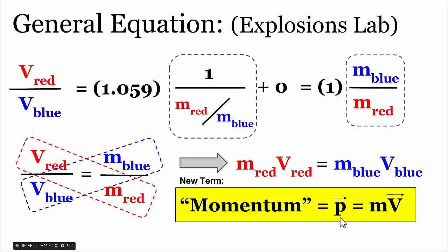In physics, we use a lowercase p to represent momentum, and it's calculated by taking an object's mass times its velocity. Remember that these arrows over a variable indicate that the variable is a vector quantity. It's something that has both size and direction.